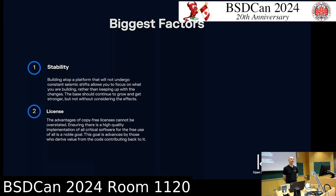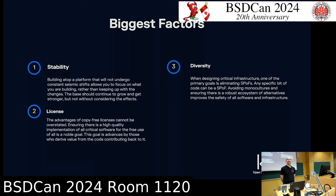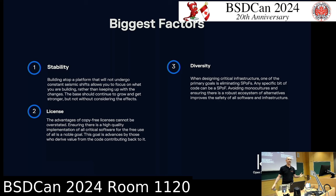The other major factor is obviously the license. For many companies that's a deciding factor — the GPL, especially v3, has clauses that make it incompatible with building a product. Third is diversity: some companies want to avoid monocultures or single points of failure. If everything they run is Linux, Linux becomes a single point of failure. Building diversity means that if there's a bug in one kernel or daemon, a portion of their infrastructure using a different combination will still be available.